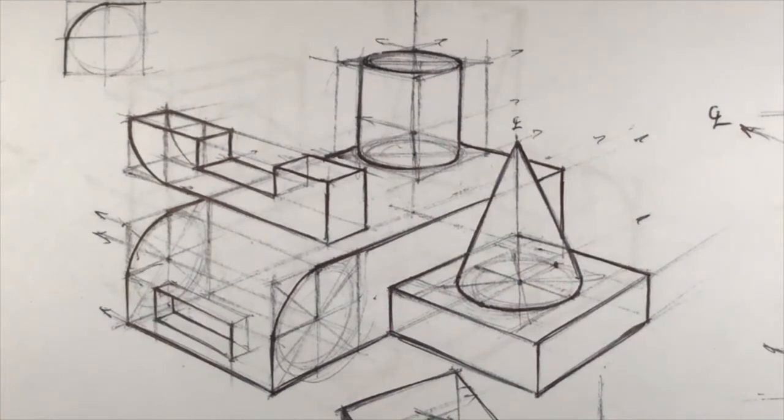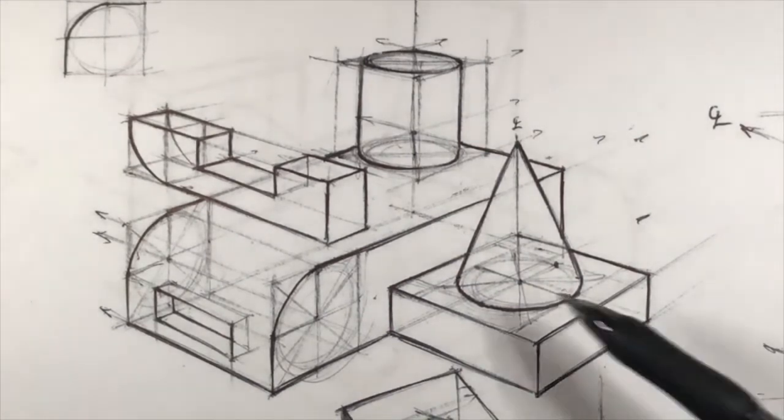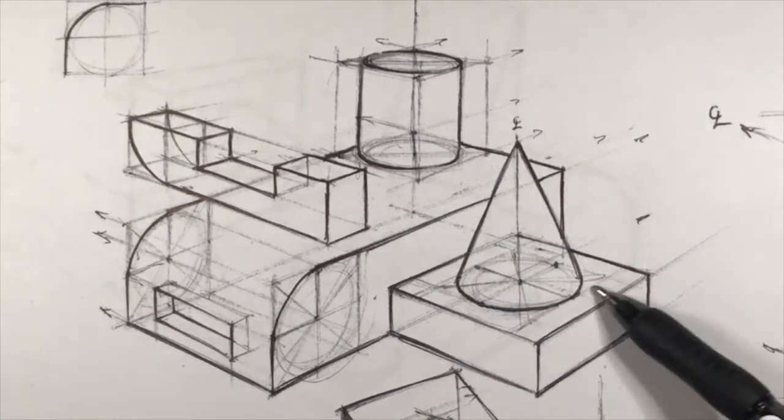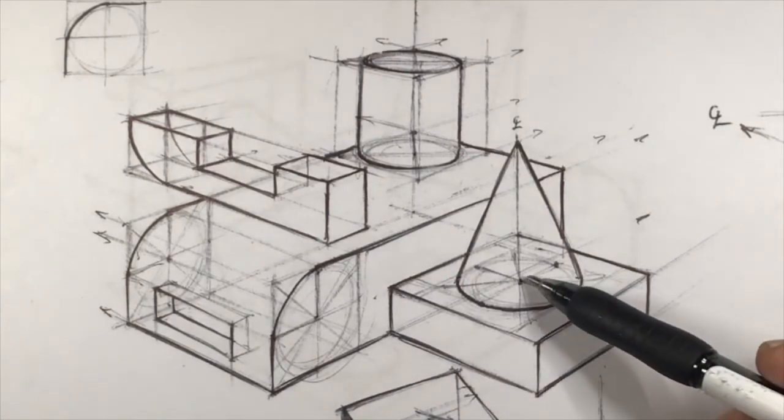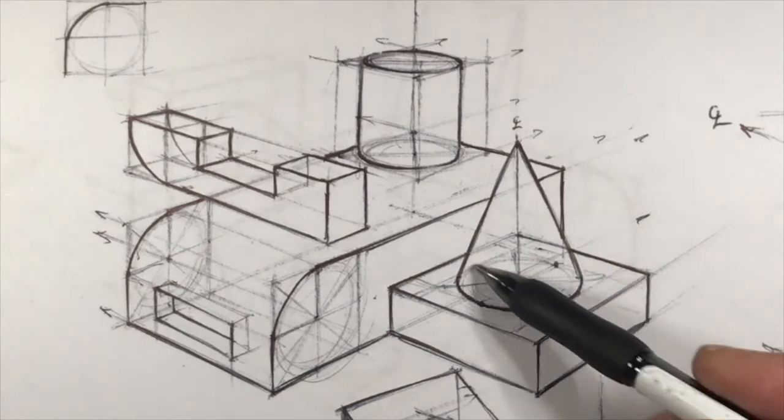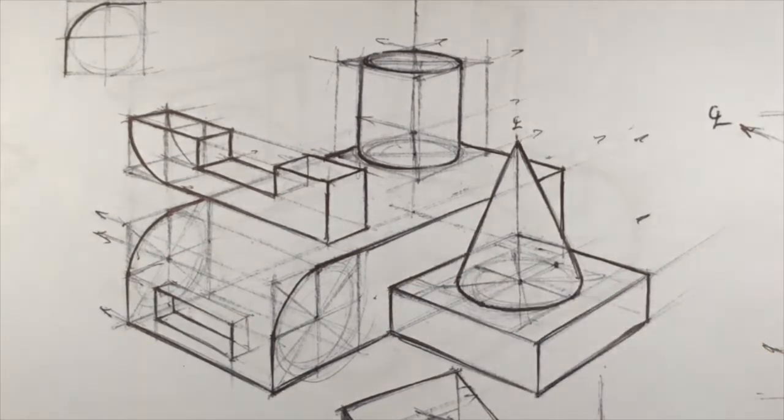As always, when mapping ellipses it's important to proportion the square in perspective correctly, crossing the diagonals to find center and dividing to find the tangent points of your ellipses.